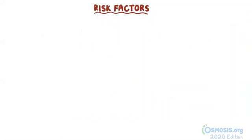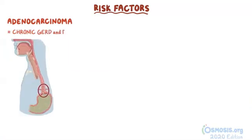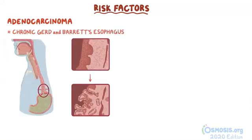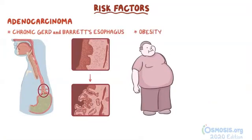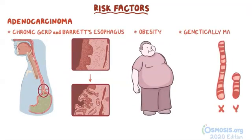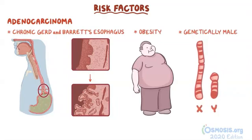The strongest risk factor for adenocarcinoma is chronic GERD and Barrett's esophagus. Obesity and being a genetically male individual also increases the risk of adenocarcinoma.